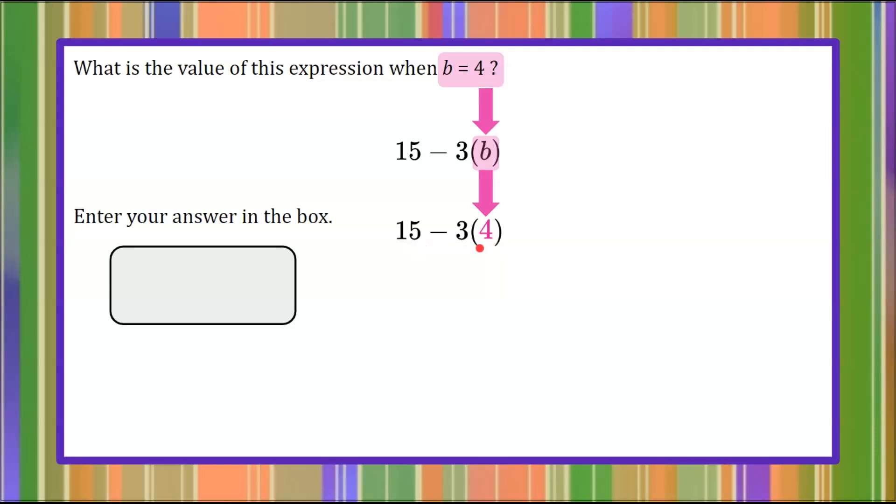Now we need to evaluate using order of operations. So using order of operations we're going to do the multiplying first. So let's bring down our 15 subtract and then the product of 3 times 4 is 12.